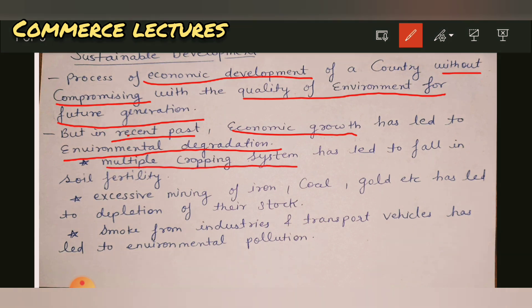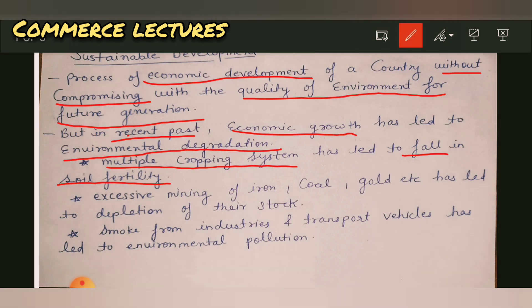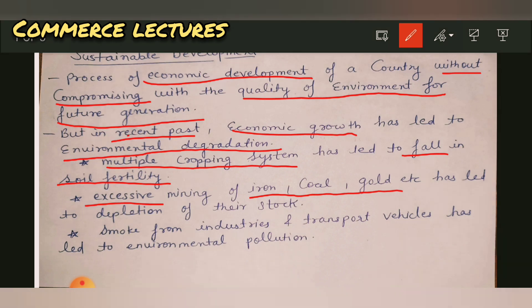For example, the multiple cropping system on one land — what have we done? Soil fertility has fallen. We have lost our soil quality and power. We have made excessive mining of iron, gold, and silver, and we have made such excessive use that our stock is slowly and slowly decreasing.